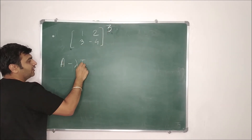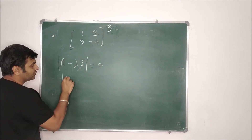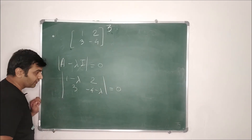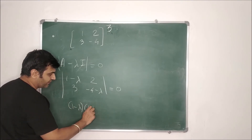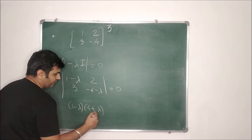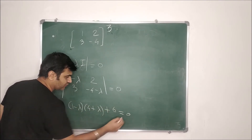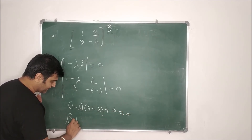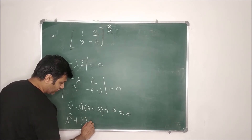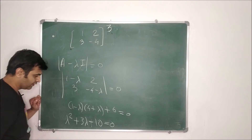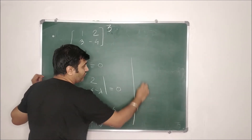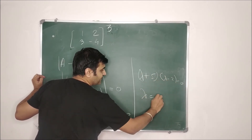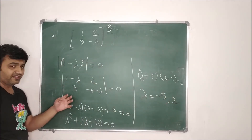To find the eigenvalues, we ignore the power and compute det(A − λI) = 0. So (1−λ)(−4−λ) − 6 = 0, which gives λ² + 3λ − 10 = 0. Factoring: (λ+5)(λ−2) = 0, so λ = −5 and λ = 2.